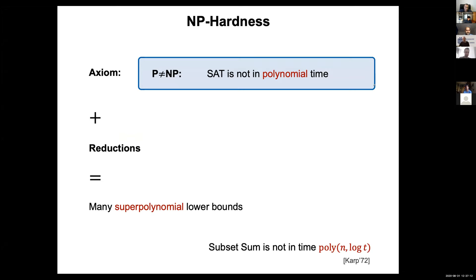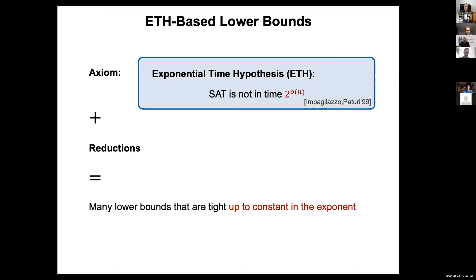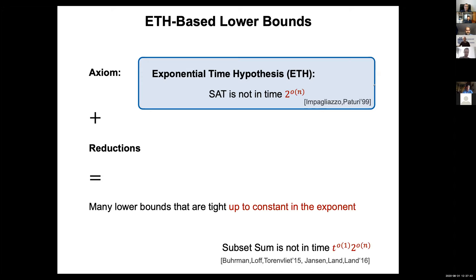About 20 years ago, Impagliazzo and Paturi introduced stronger hypotheses. First, the Strong Exponential Time Hypothesis (SETH), which states that satisfiability is not in time 2^{o(n)}. Combining this with standard reductions yields lower bounds tight up to the constant in the exponent. In particular, for subset sum, Bringmann et al. and Janssen et al. independently showed it cannot be solved in time t^{o(1)} · 2^{o(n)}.